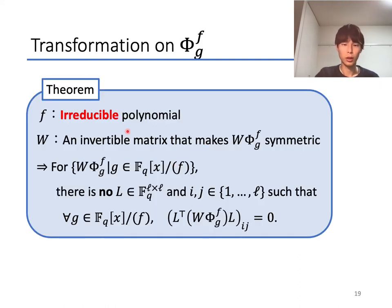About this security problem, in this theorem we show that if f is an irreducible polynomial and W is an invertible matrix that makes W·Φ_g^f symmetric, then there is no ℓ times ℓ matrix L and (i,j) such that for any g in the quotient ring, the (i,j) element of L^T·W·Φ_g^f·L equals 0. This theorem indicates that if we choose f as an irreducible polynomial in the proposed variant, then it will be resistant to the attack on BAC-UOV.